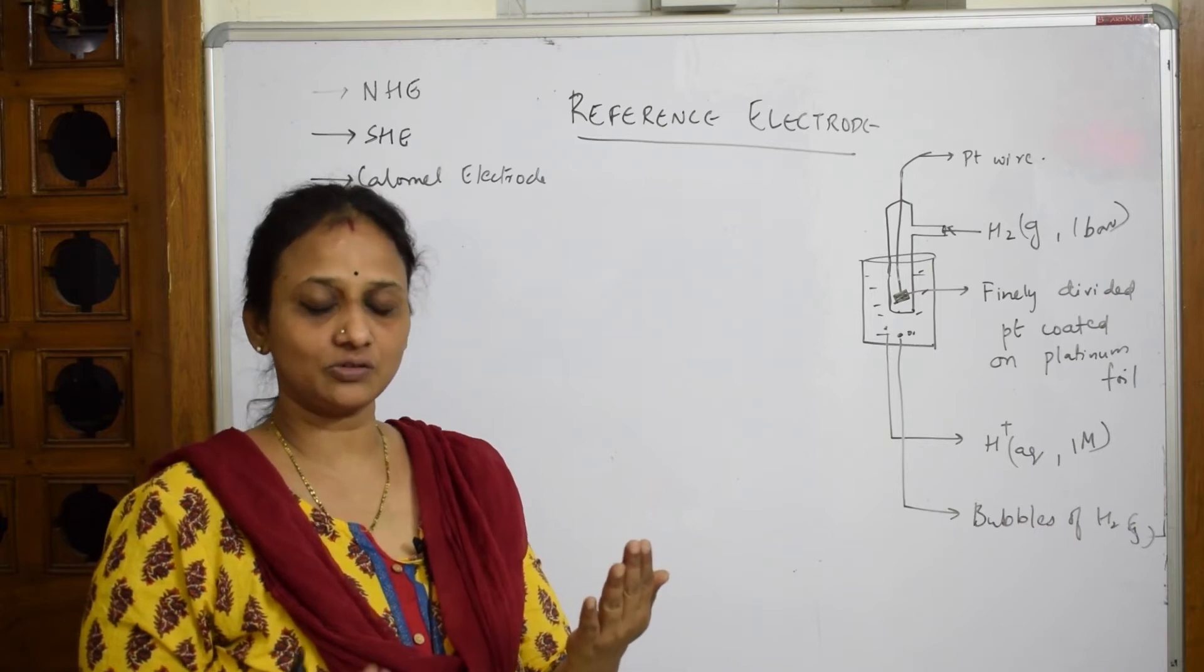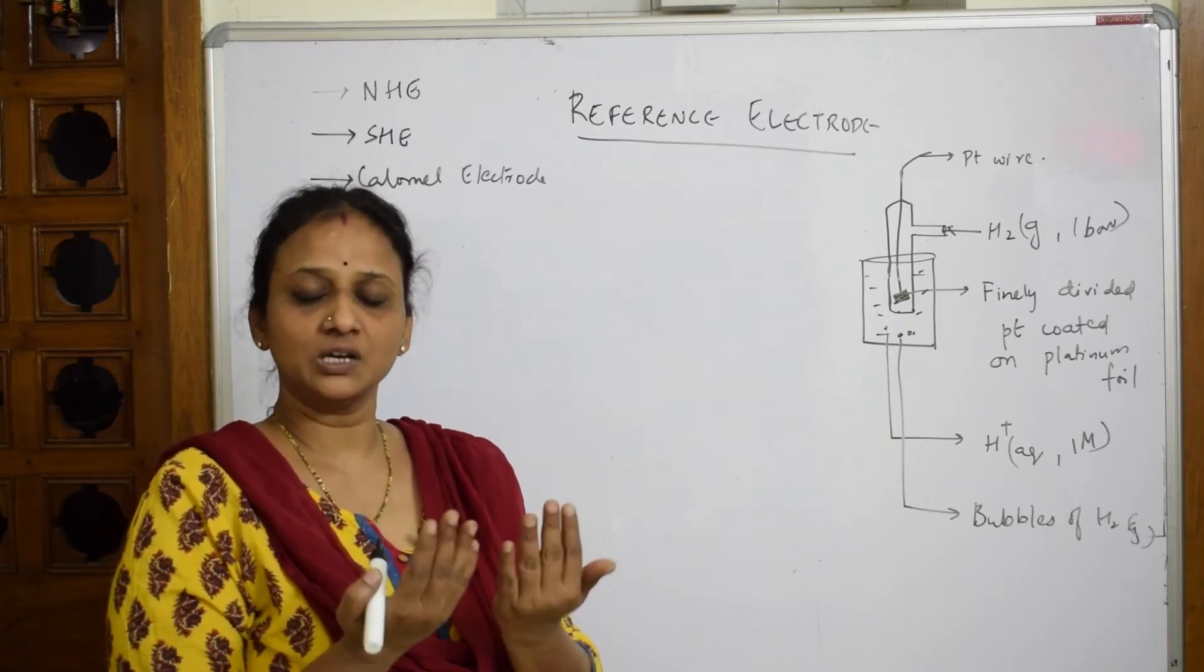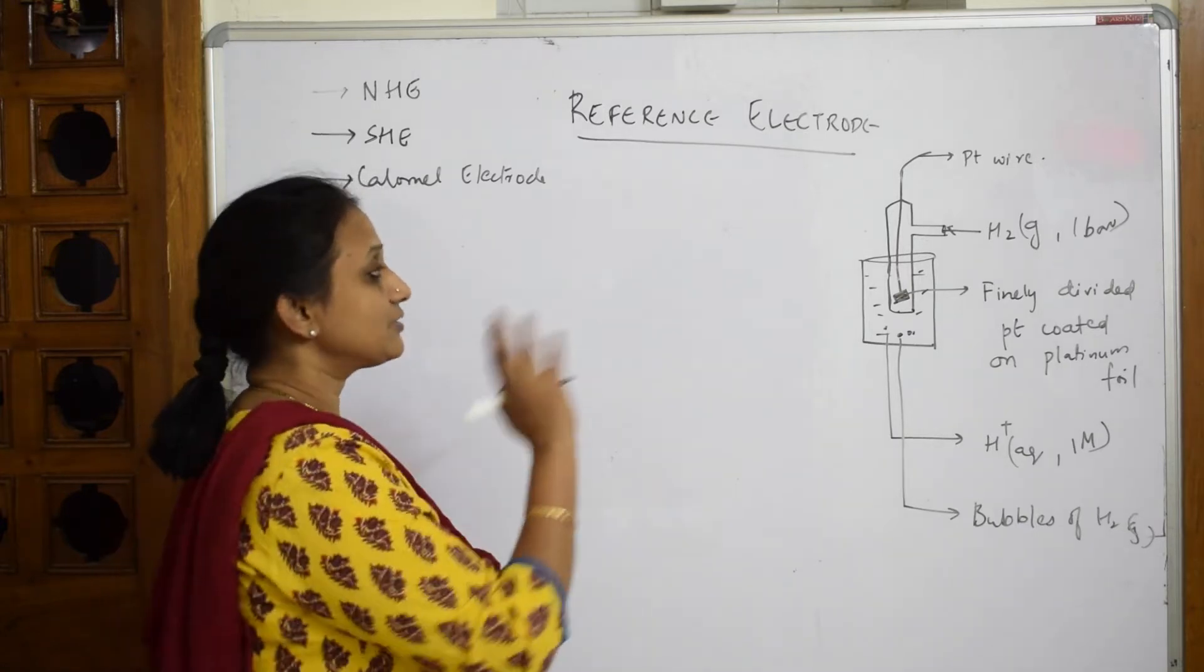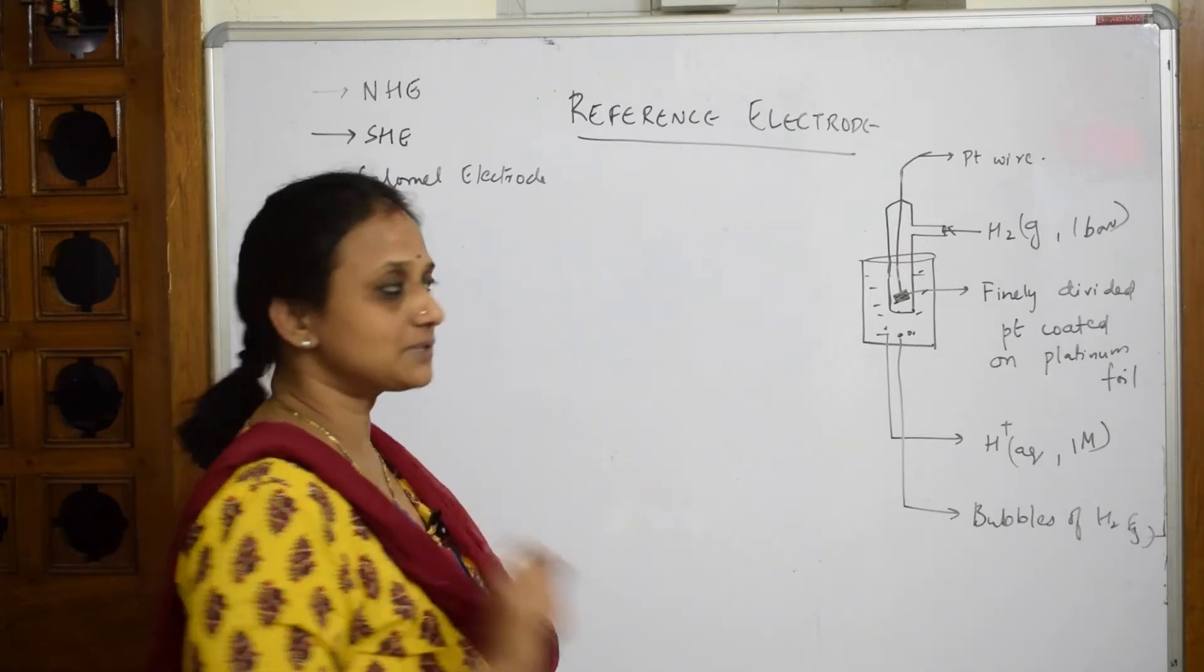So one is known and I can easily find out the other. That means in a reference electrode like SHE, the first important thing is you have a platinum wire.